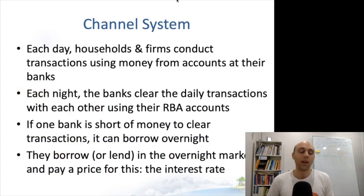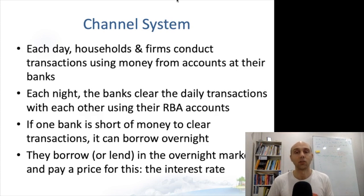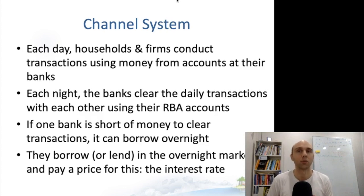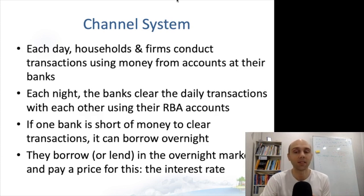How does the channel system work? Every day there are many transactions that happen between the commercial banks in Australia — for instance, you may transfer money from your Commonwealth Bank account to your landlord's National Australia Bank account. At the end of the day, the banks need to clear their debts with each other using their accounts held at the RBA. If one bank is short of money to clear its transactions because it hasn't held enough reserves, it can borrow in the overnight market. The price of borrowing money is the interest rate.